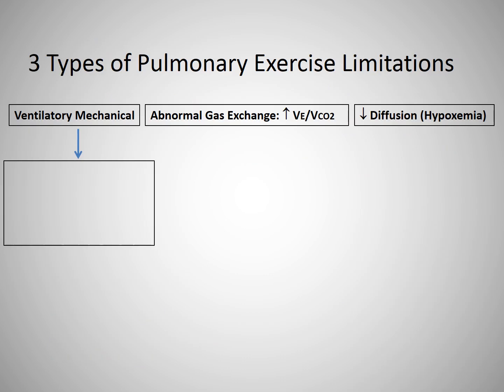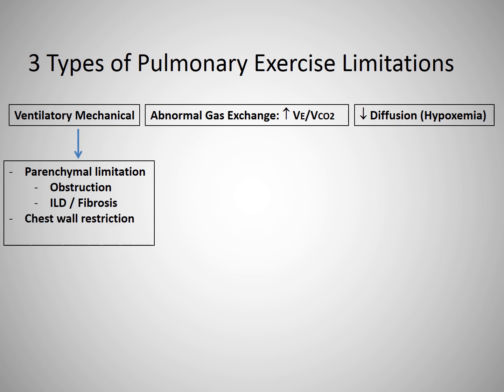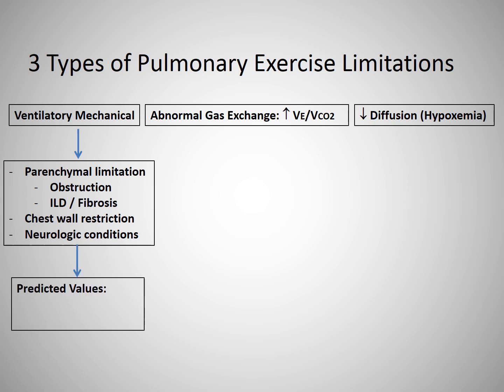Ventilatory mechanical limitations can occur in parenchymal lung diseases caused by obstruction or fibrotic or interstitial diseases. It can also occur as a result of diseases or deformities of the chest wall that limit the ability of the lung to expand, such as kyphoscoliosis. Neurologic diseases that impair the function of the muscles that control ventilation can also limit the mobility of the chest wall and diaphragm, causing mechanical limitations. The predicted value can be obtained by either measuring the MVV during spirometry or estimating it by multiplying the FEV1 times 40.